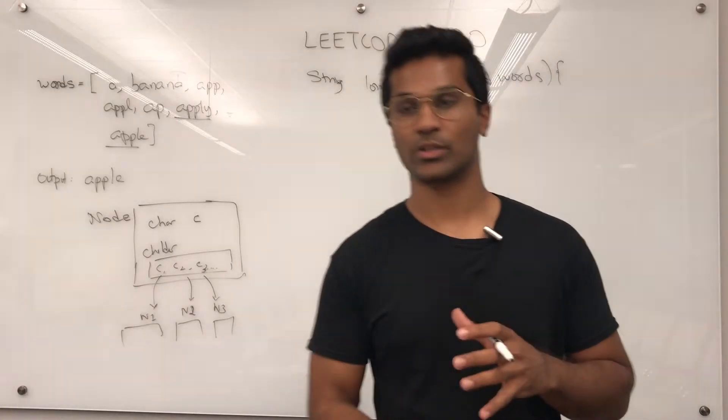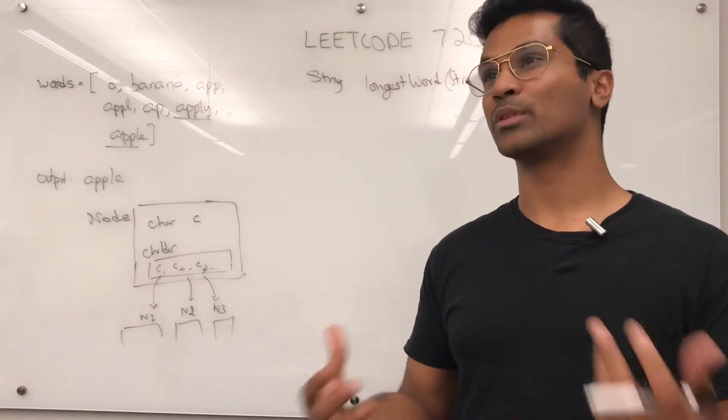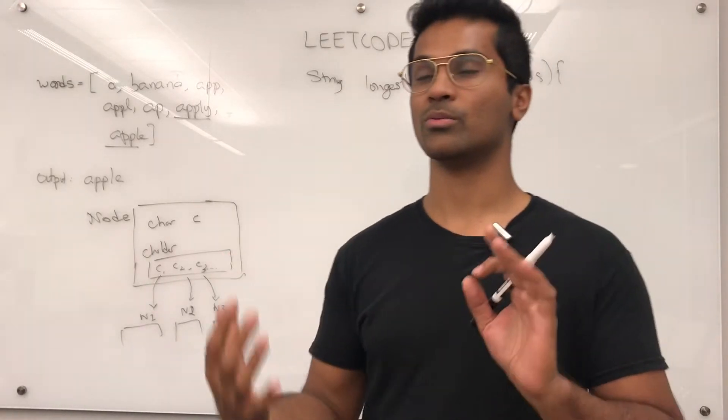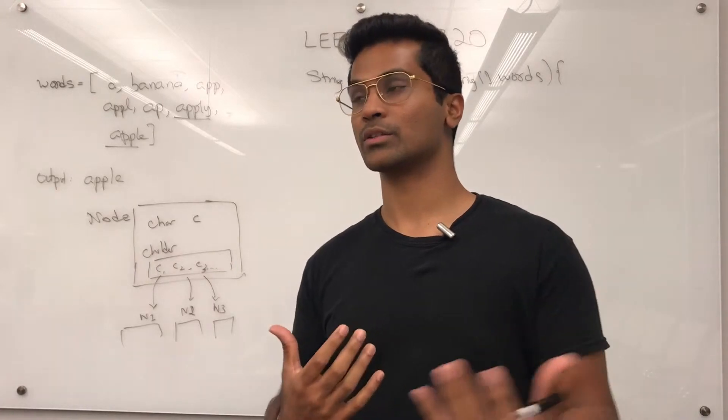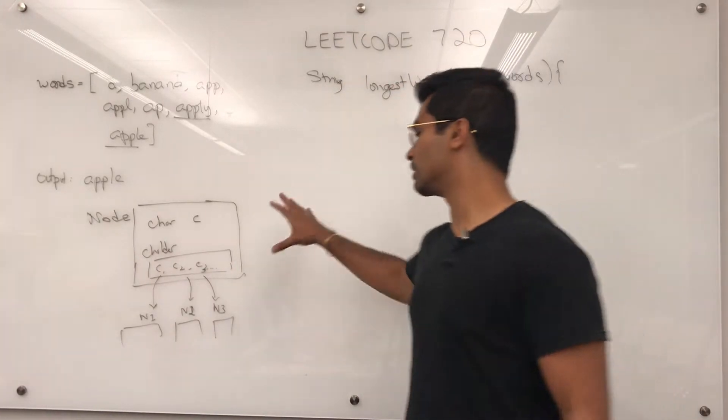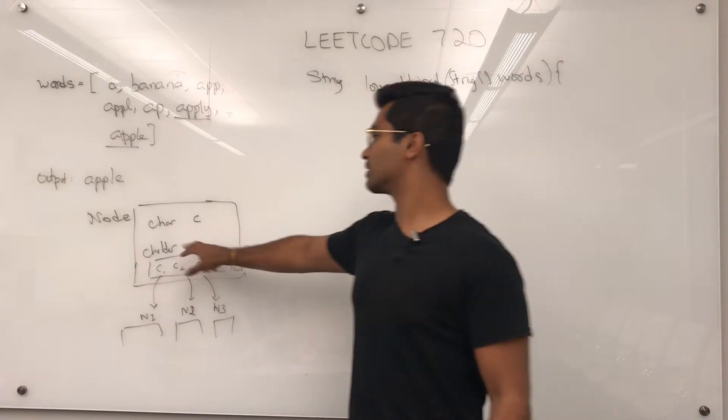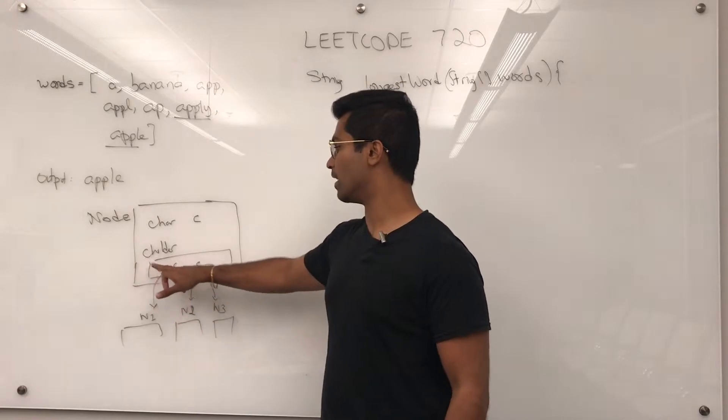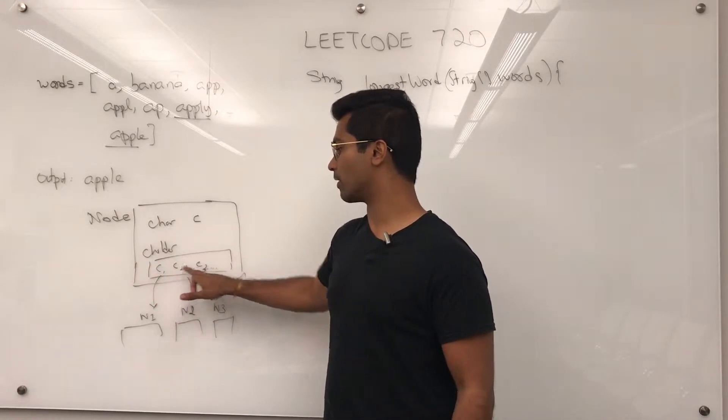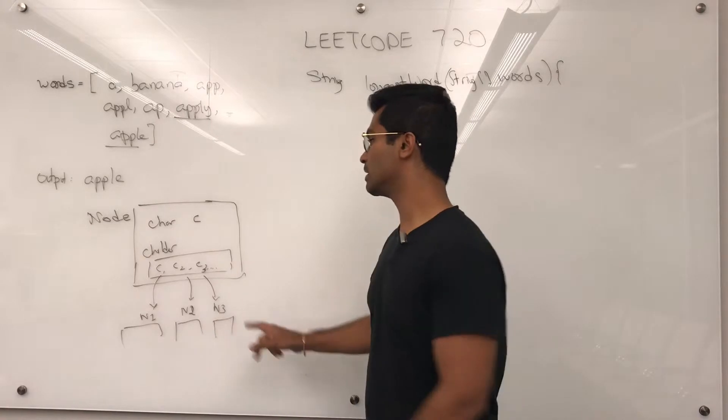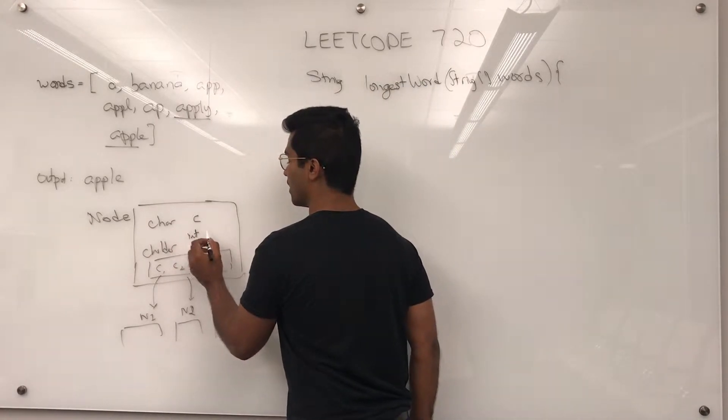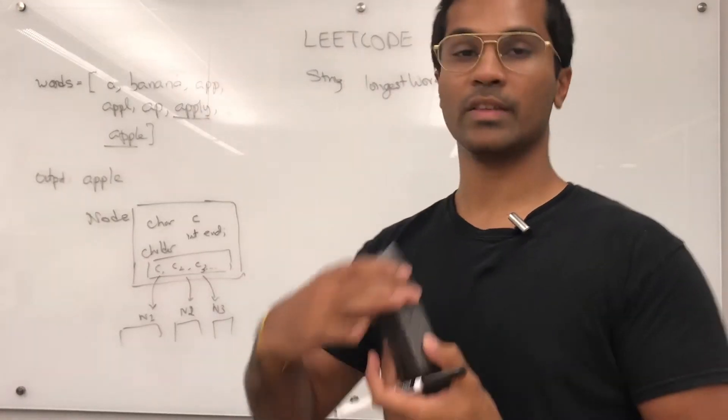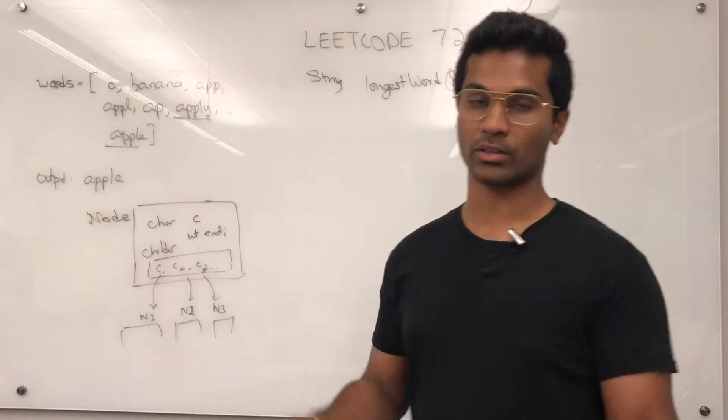Now there's many ways to implement tries and this particular solution might not be the best way to implement a trie, but it's good to know and learn so we have more exposure. Now a node class is going to look like this. There's going to be a character C and it's going to have a hash map of key being characters and the value being corresponding nodes. And one more, we're going to have an int end to signify whether that node is the end of a word or not.